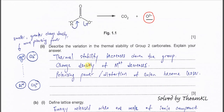Part 2: describe the variation in the thermal stability of Group 2 carbonates and explain your answer. Thermal stability increases down the group, meaning it becomes harder to decompose and needs more energy to break the bonds. This is because the ionic size becomes larger, so the polarizing power of the cation is getting lesser. Thermal stability increases down the group.